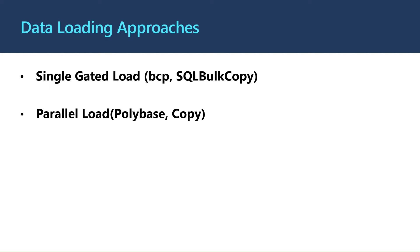On the other hand, there is parallel loading. These methods allow data load to leverage the power of the MPP engine of SQL Data Warehouse. It bypasses the control node and actual data transfer happens directly between the compute nodes and the data sources. The more compute nodes you have, the better performance you get. Because PolyBase and the Copy operation leverage MPP on the back end, it is the recommended best practice for data movement.